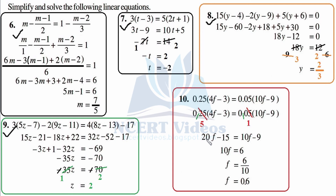Now let's open the bracket. 5 times 4 is 20f, minus 5 times 3 is 15. Equal to 10f minus 9 as it is since it is multiplied by 1. If you had started by multiplying out the decimals directly you would have gone a long way — so always minimize your equation first. Now separating: 20f minus 10f — transposing 10f to the left gives 10f. Equal to: minus 9 plus 15 when transposed — different signs, subtract — 15 minus 9 is 6, positive because 15 is greater. So 10f equals 6.